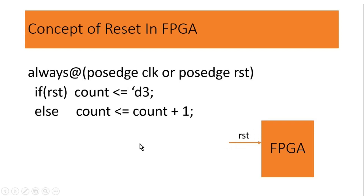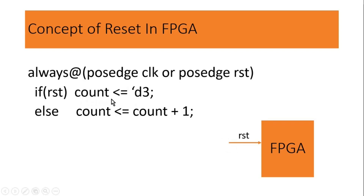Friends, let me ask you one question. Just assume that I program this bitfile inside the FPGA, but make sure that I am not going to press this reset switch — that means I am not going to assert this reset. This reset will always be 0. Now you have to tell me: what will be the initial value of this count? Will it be 0 or will it be 3?